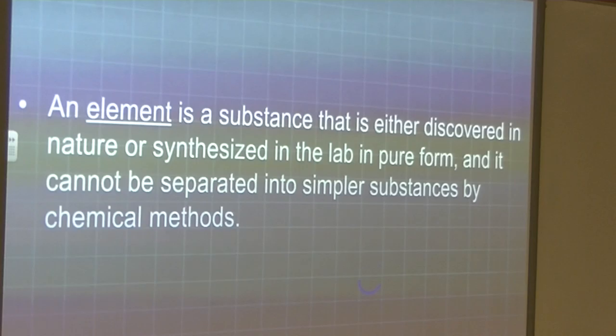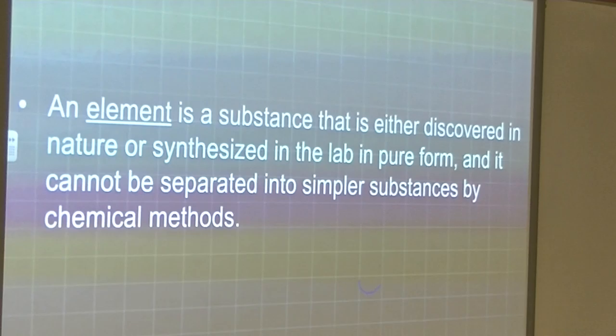So an element is a substance that is either discovered in nature or synthesized in a lab in pure form. So some of the elements on the periodic table are synthesized in a lab. They're not found in nature. And they cannot be separated into simpler substances by chemical methods. So even by chemical methods, elements cannot be broken down into anything more simple than the element itself.